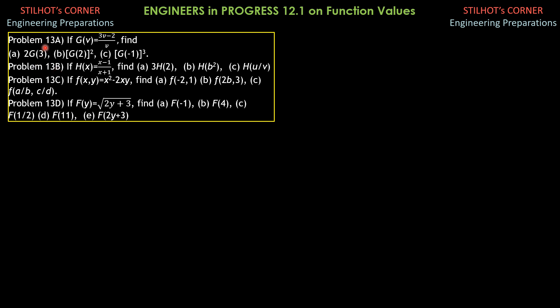Let's focus first on 13a. g(v) = (3v − 2)/v, so 2 times g(3) is 2 times (3 times 3 minus 2) all over 3. That gives us 2 times 7 over 3, which is 14 over 3. So, the answer is 14/3.